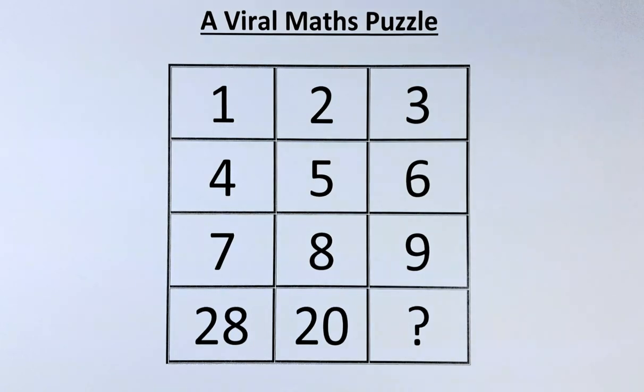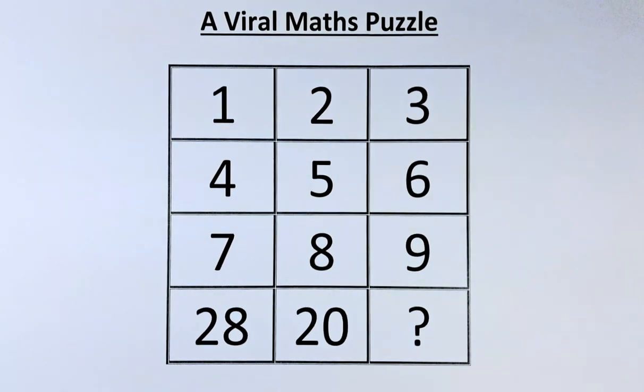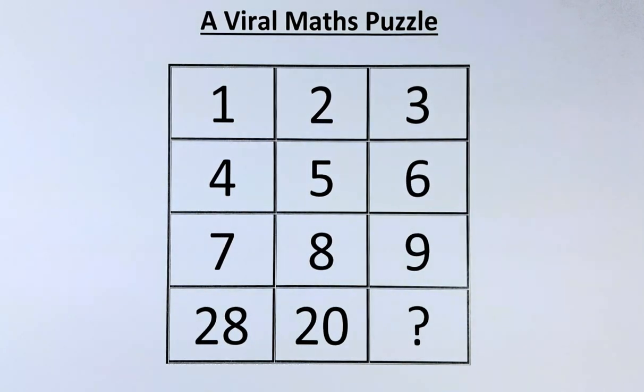Welcome back to this viral math puzzle. The numbers are very straightforward. It's 1, 2, 3, 4, 5, 6, 7, 8, 9. And in the final row, we have 28, 20 and the question mark. Can you find the missing number in the question mark?